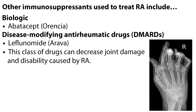Other immunosuppressants used to treat RA include the biologic abatacept, brand name Orencia, and leflunomide, which is in a drug class called disease-modifying anti-rheumatic drugs. This class of drugs can decrease joint damage and disability caused by RA.